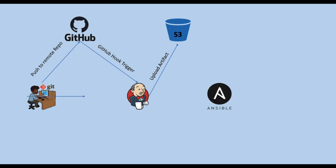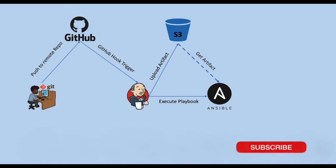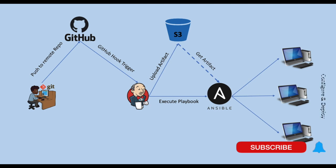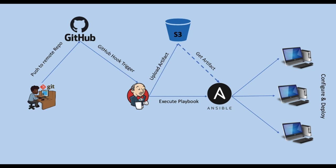The next build will execute the Ansible playbook. Once the Ansible playbook is executed, Ansible will get the artifacts from S3 and do the configurations — configuration management as well as deploying the applications into various environments, such as multiple staging environments or QA environments.